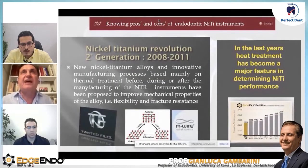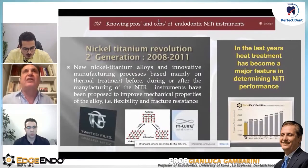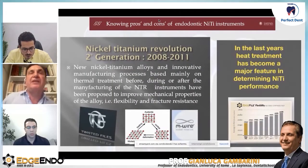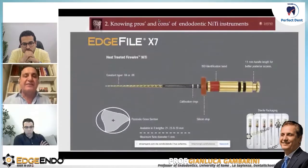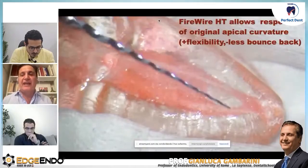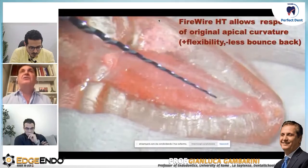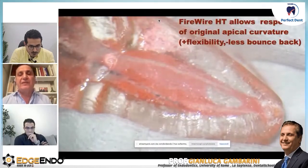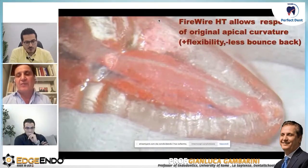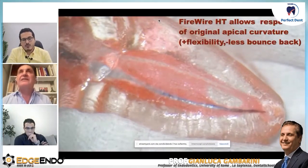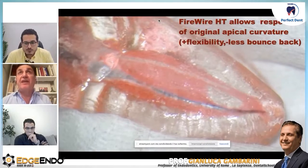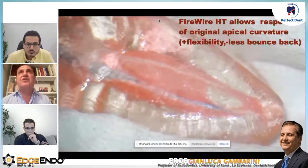That's why heat treatment is now becoming a major feature in determining NiTi performance. Having said this, this is the file I'm using nowadays. We are able to deal with very, very complex apical curvature, sometimes even with very abrupt curvature, in a much better way.